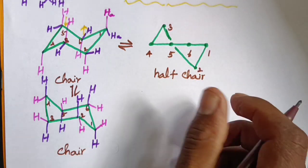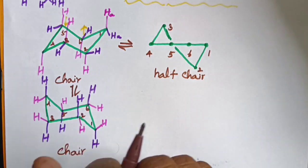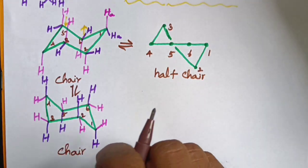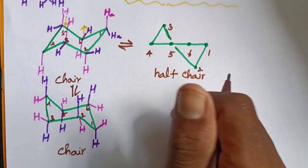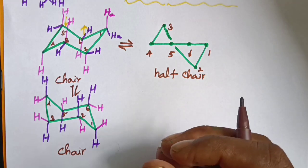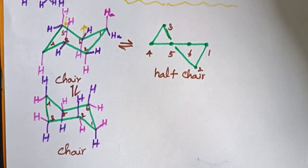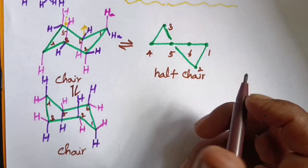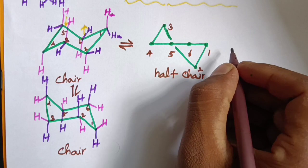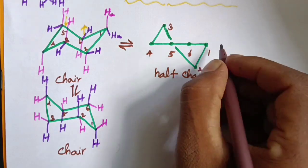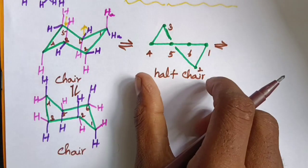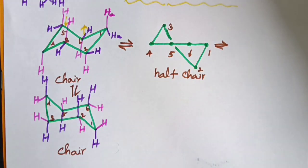The half chair is the highest energy conformation — it is a highly unstable compound. Next, we will look at the energy profile diagram and explain it. We will do the ring flip rotation.